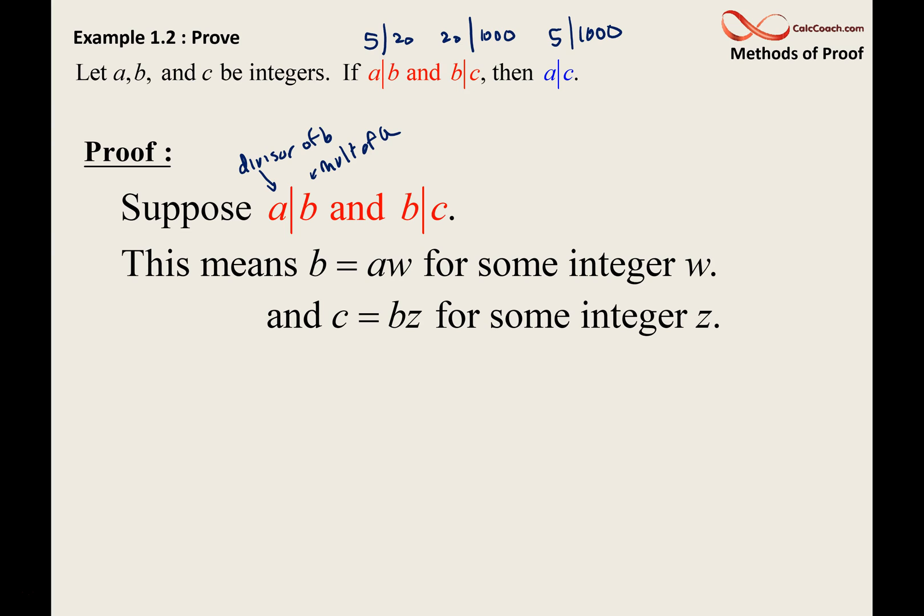Now, we're going to put these together to end up with a divides c. Well, how do we do that? We're going to substitute. If c equals bz and b equals aw, we can sub in, replace the b with aw. Now, we have c equals awz.